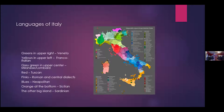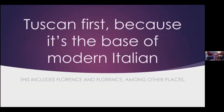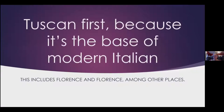This is actually a modern language map, just to be clear, and you can find modern language discussions and dictionaries for all of these — including dictionaries of the language spoken around Venice. We're going to start with Tuscan because it's the base of modern Italian and because an awful lot of people are really interested in Florence, Pisa, and those kinds of locations.